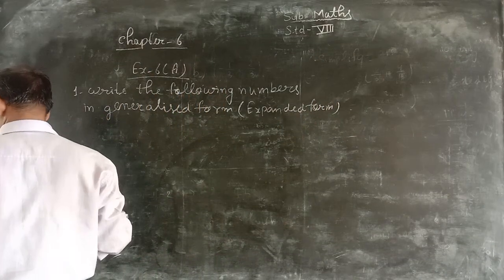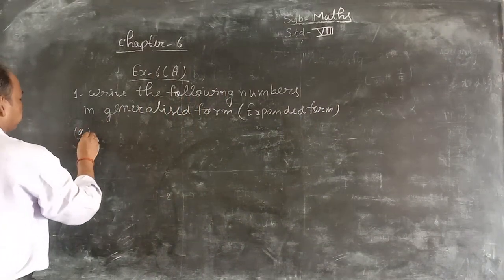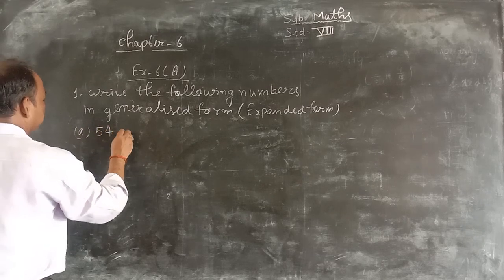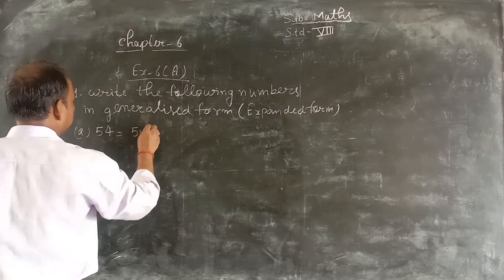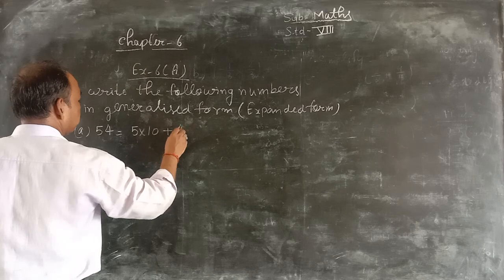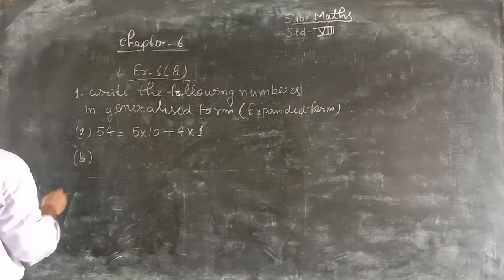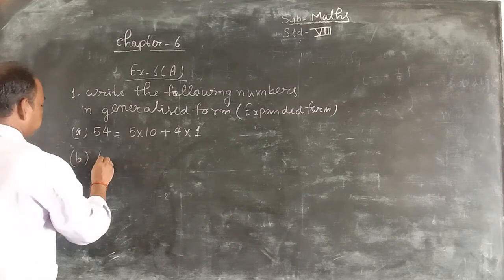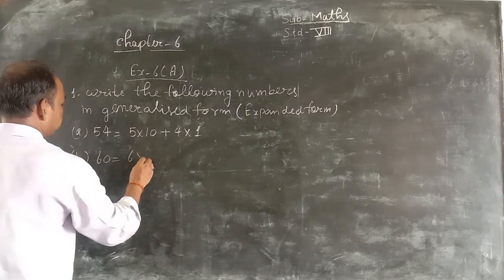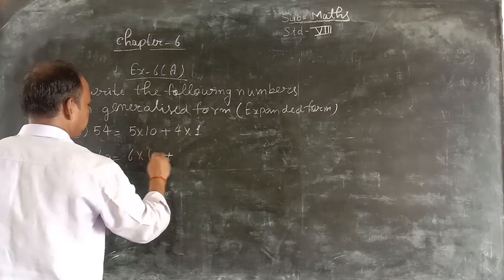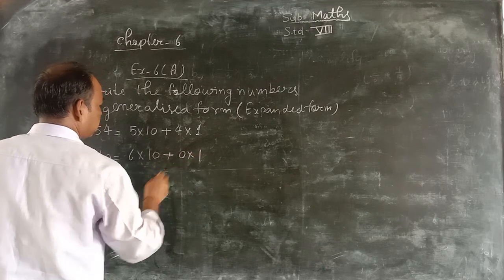Part number a, 54. 5 multiply 10 plus 4 multiply 1. Part number b, 60. 6 multiply 10 plus 0 multiply 1.